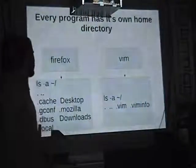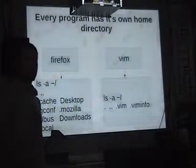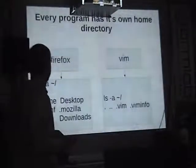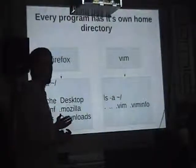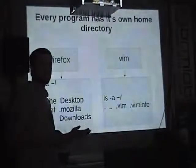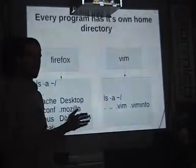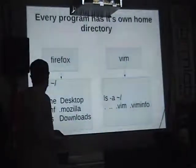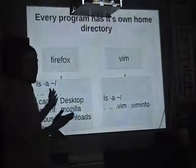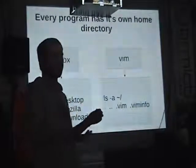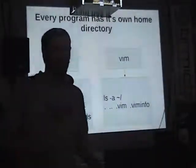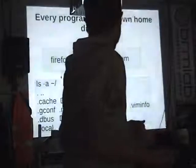Every program has its own home directory. This is nice for a lot of reasons — not just security. For example, with Firefox, I've always wondered what files I need to back up to have my Firefox settings saved. It turns out there's a lot: the gconf settings, the dbus stuff, .local. I didn't even know about this until I started using sub-user and had a separate home directory for each program. So it's really nice from an analysis standpoint as well.